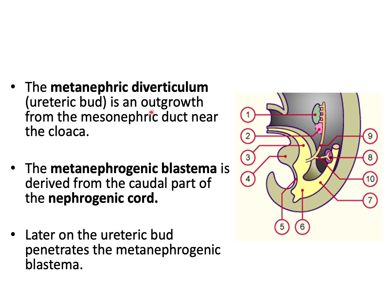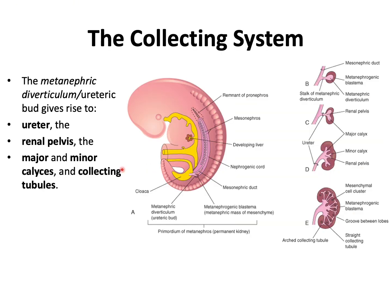The metanephric diverticulum or ureteric bud is an outgrowth from the mesonephric duct near the cloaca. The metanephrogenic blastema is derived from the caudal part of the nephrogenic cord. Later on, the ureteric bud penetrates the metanephrogenic blastema. The metanephric diverticulum — the ureteric bud — will give rise to the ureter, renal pelvis, major and minor calyces, and the collecting tubules. It forms the renal pelvis, then bifurcates to give rise to major calyces, which bifurcate again to form minor calyces, and eventually the entire collecting tubules are formed.